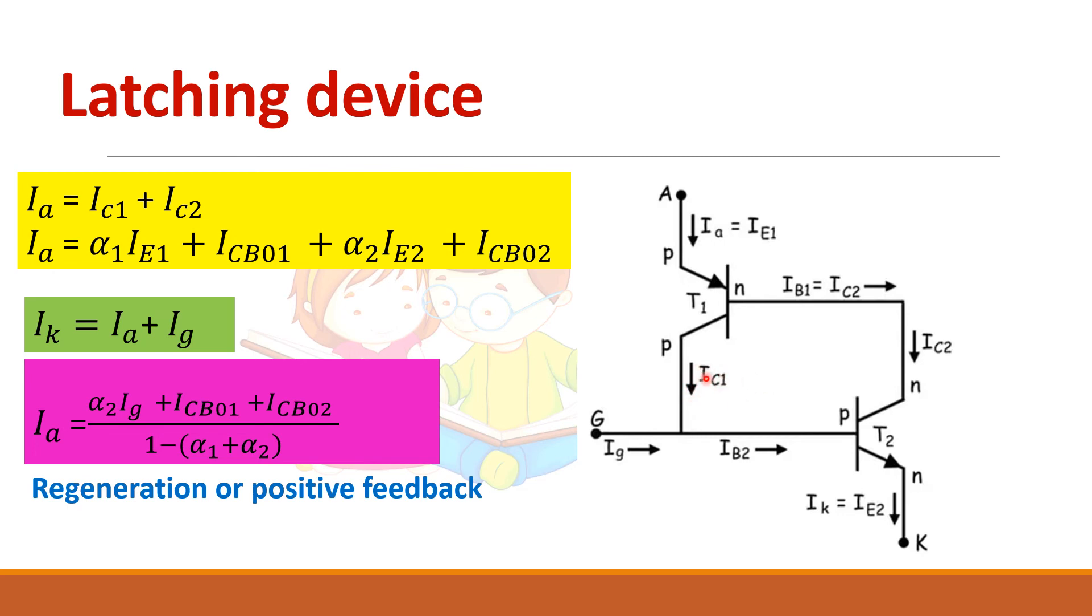Now here emitter current will flow, which increases the alpha 1 and collector current will also flow. So this collector current plus gate current will act as a base for this transistor. So IB2 increases, which again increases this one and this one. So now one loop of current will be flowing.